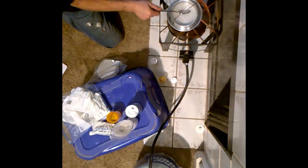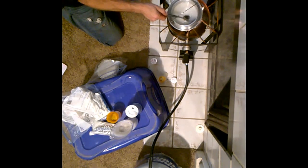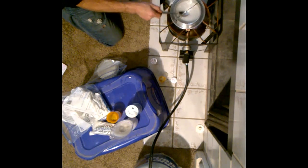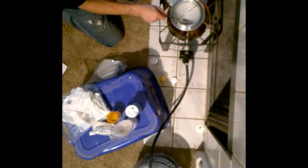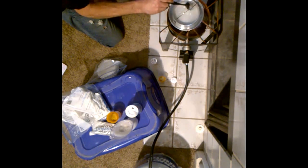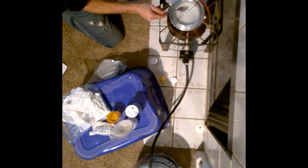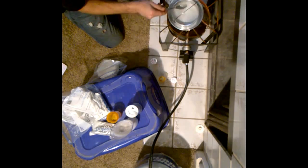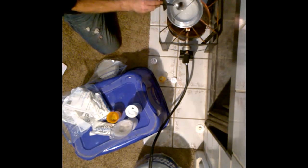Once it simmers a couple minutes, we'll take it off and place it in the freezer. Once we place it in the freezer, the chemical reactions will start taking place. It'll form crystals, and that's where we'll get our potassium nitrate from.